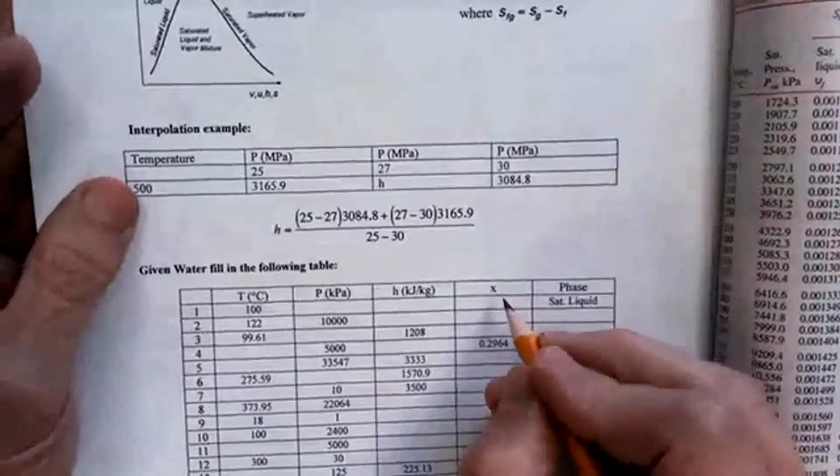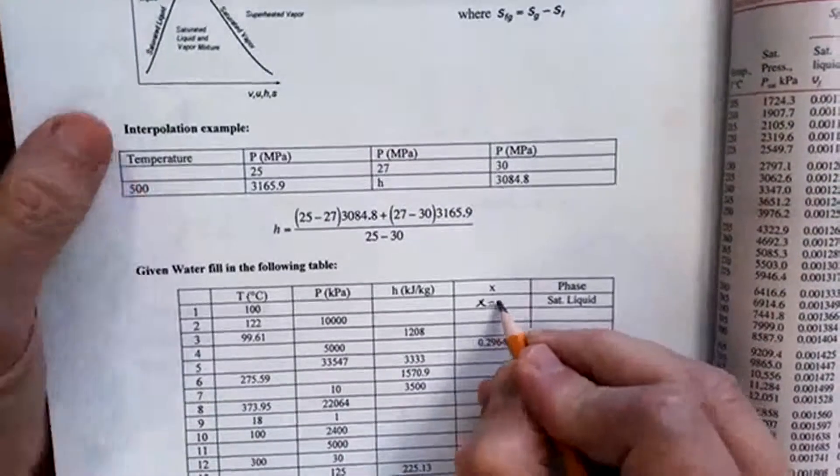So it'd be a quality of one... zero. Sorry. So the quality is going to be X equals zero.